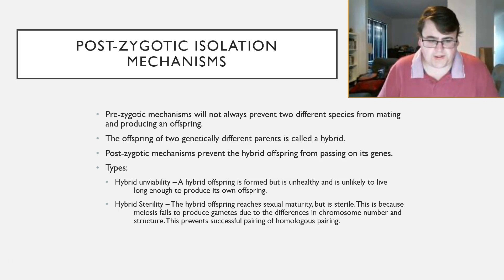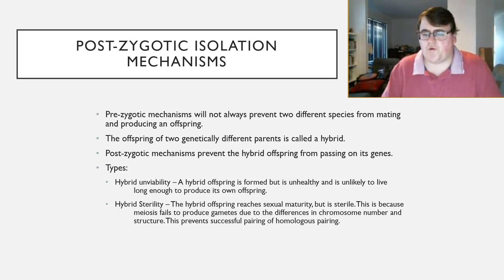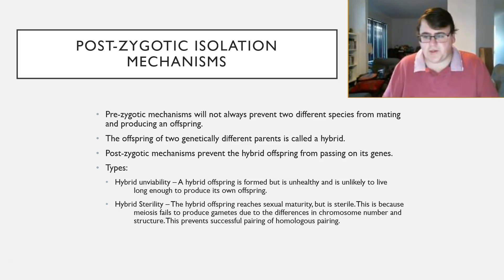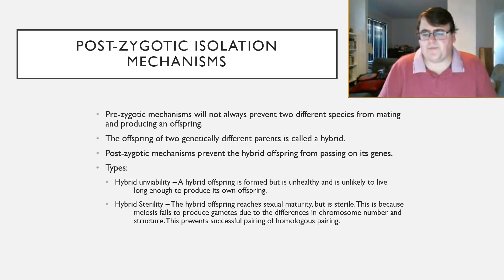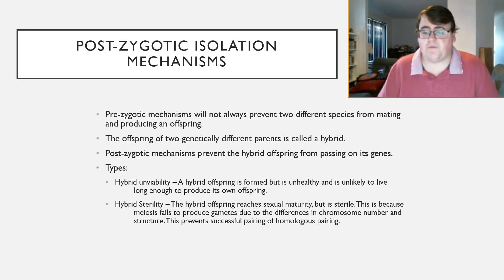Now postzygotic mechanisms. Unfortunately, prezygotic mechanisms don't always prevent two different species from mating, so sometimes two different species will produce an offspring — like the mule. The mule has to go through postzygotic isolation. Postzygotic mechanisms prevent that hybrid offspring from passing on its genes. There are two different types: hybrid unviability and hybrid sterility.